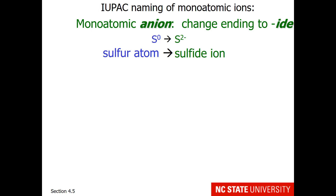We'll start with monoatomic ions. Mono of course means one, so these are ions that are formed of just one atom. For a monoatomic anion, we simply change the ending to '-ide', although sometimes the suffix is dropped.